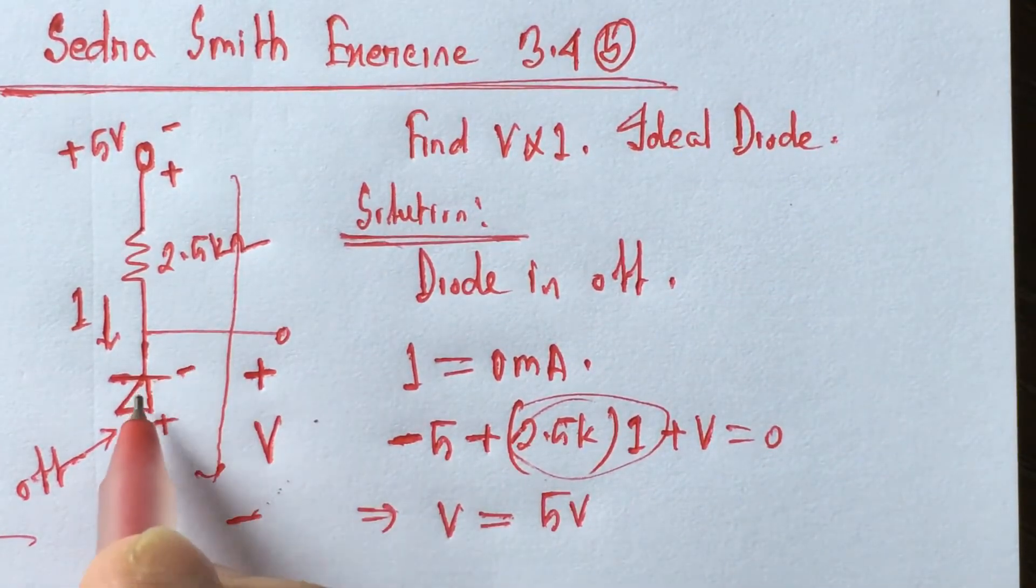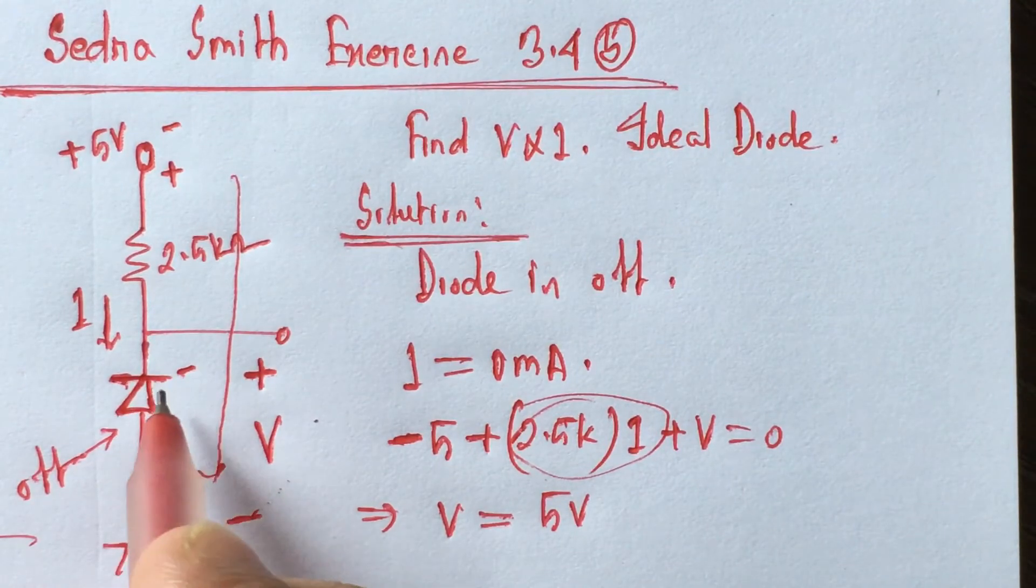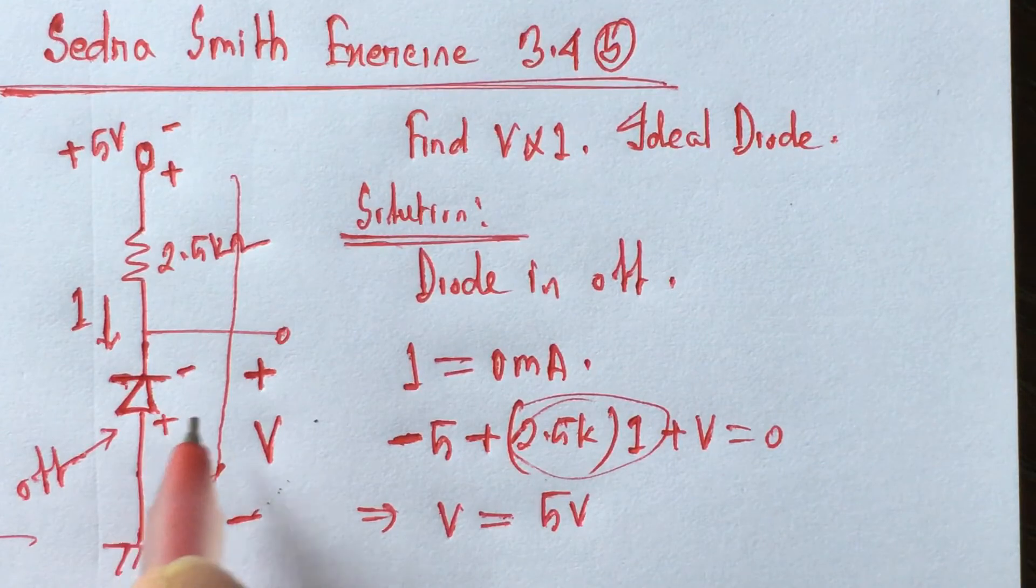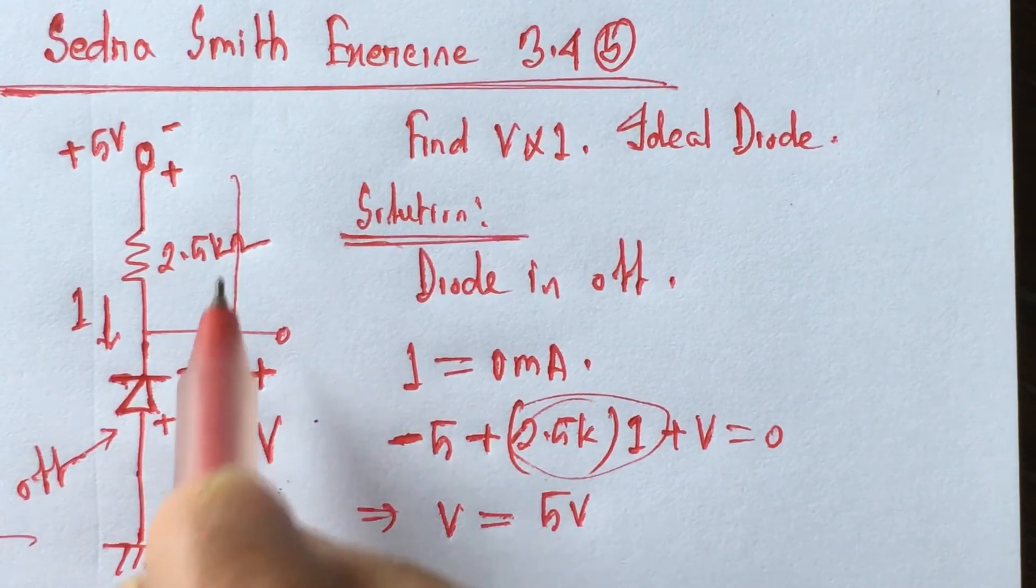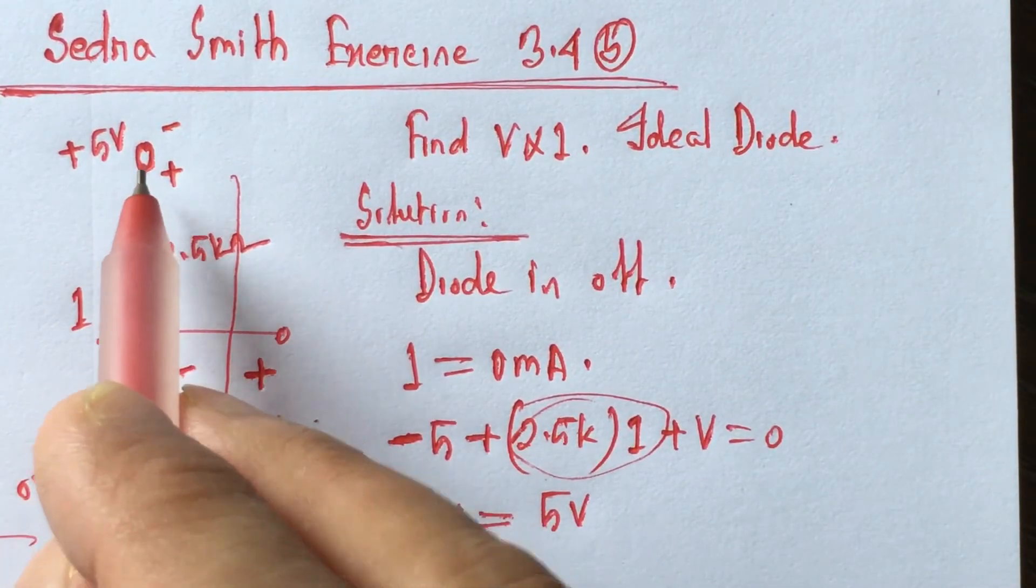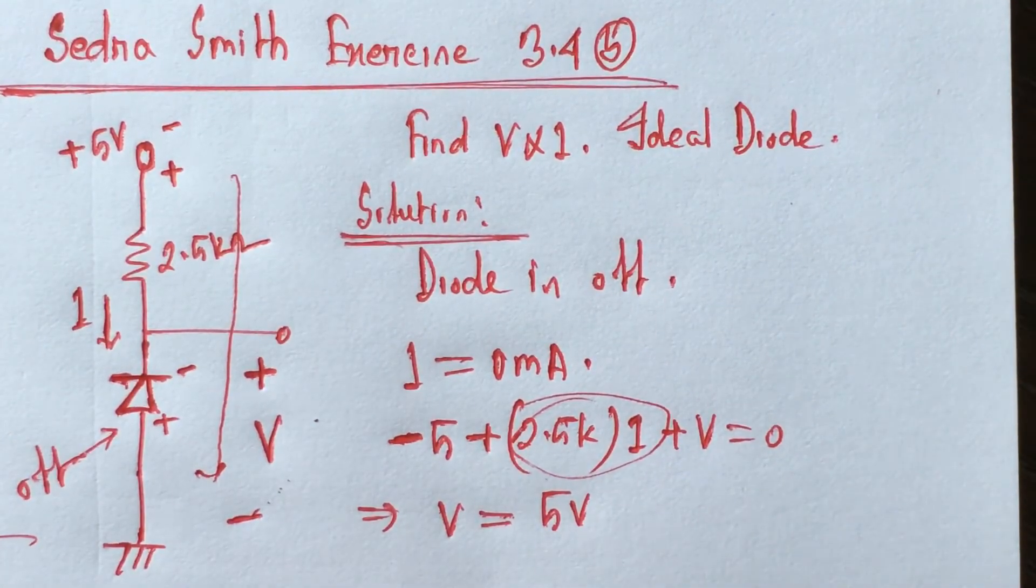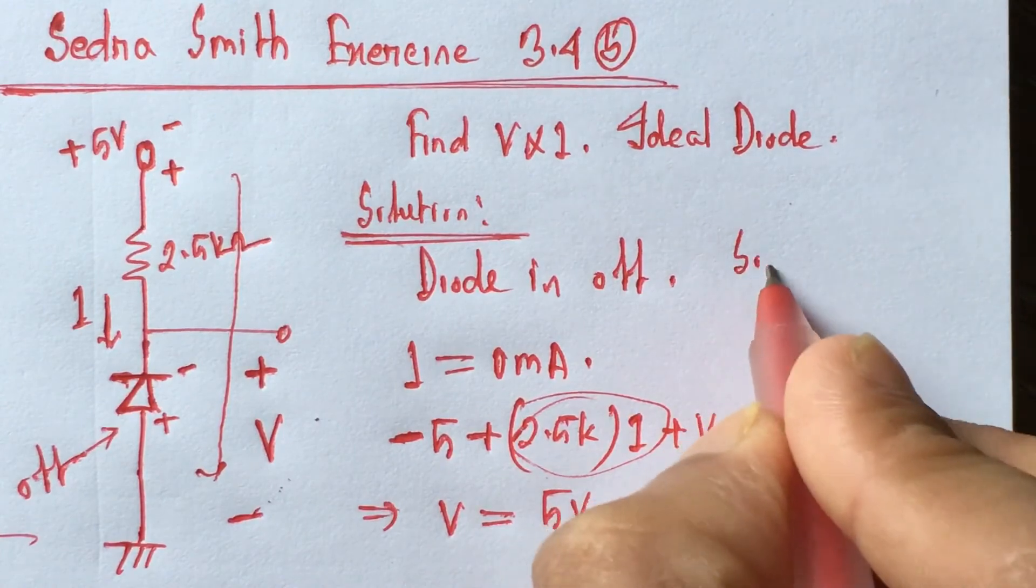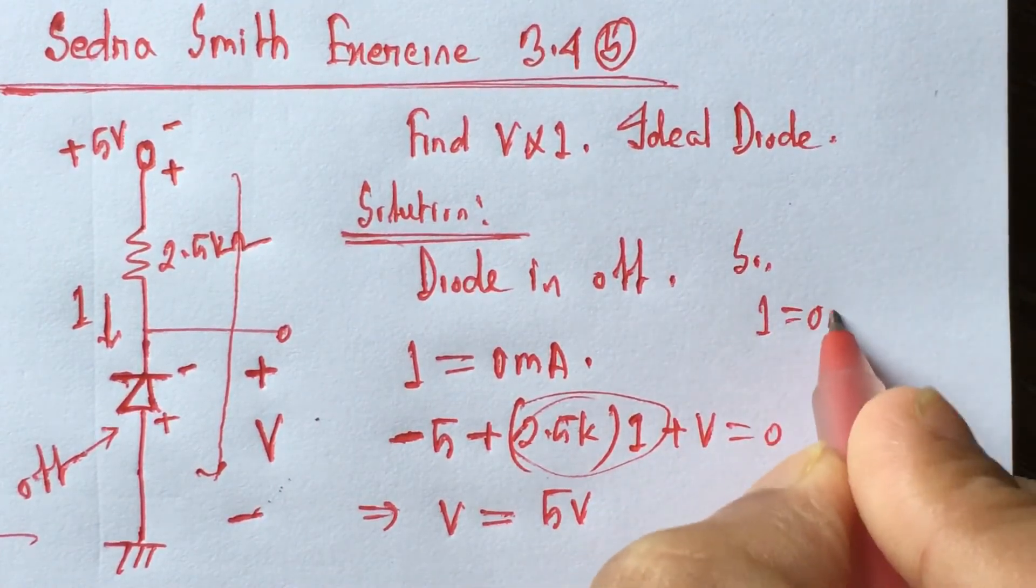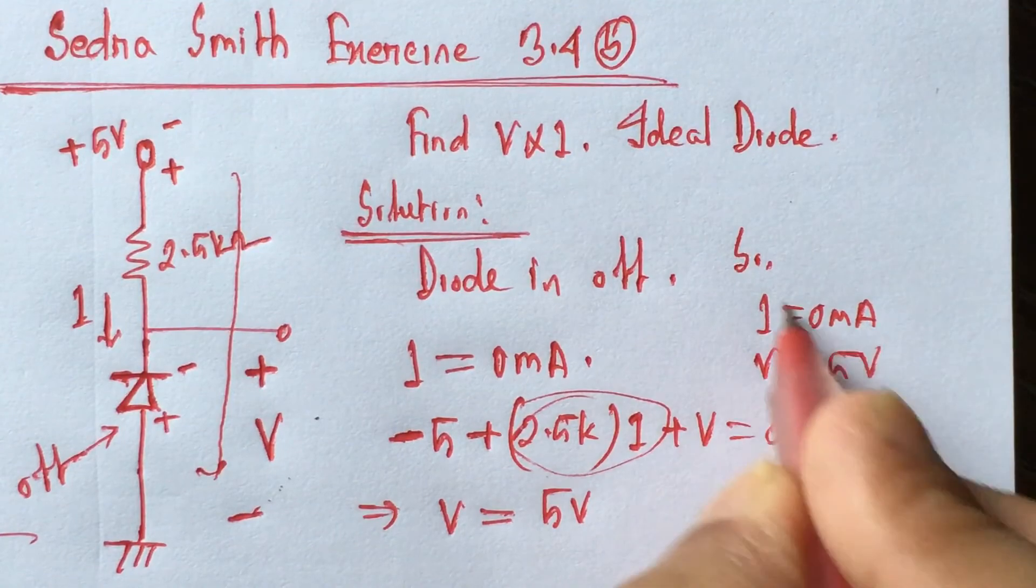Now, the diode is reverse biased and it can be replaced by open circuit and the voltage across this open diode, reverse biased diode is the voltage applied in the biasing.